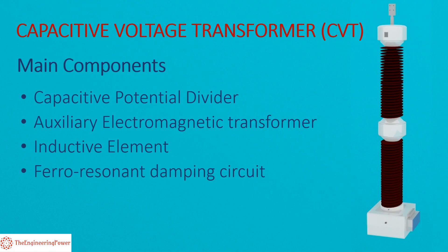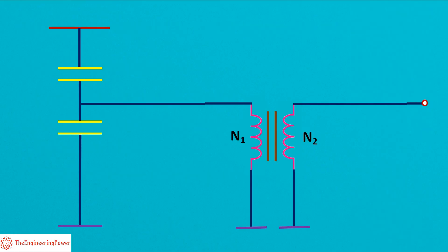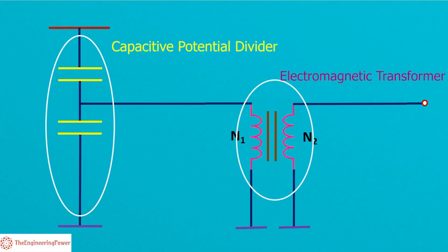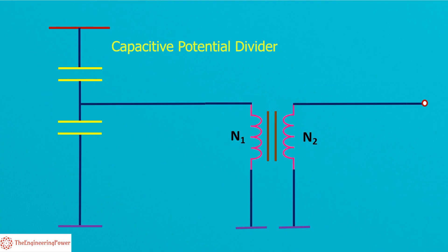Now we explain the working of CVT with the help of connection diagram. The extra high voltages are first stepped down using the capacitive potential divider. The output medium voltage is then further stepped down easily with the help of auxiliary electromagnetic transformer. The capacitive potential divider consists of a group of capacitors. The number of capacitors depend upon the voltage level. We consider the case of two capacitors. This potential divider circuit is connected to the main high voltage line whose voltage is to be measured or controlled.